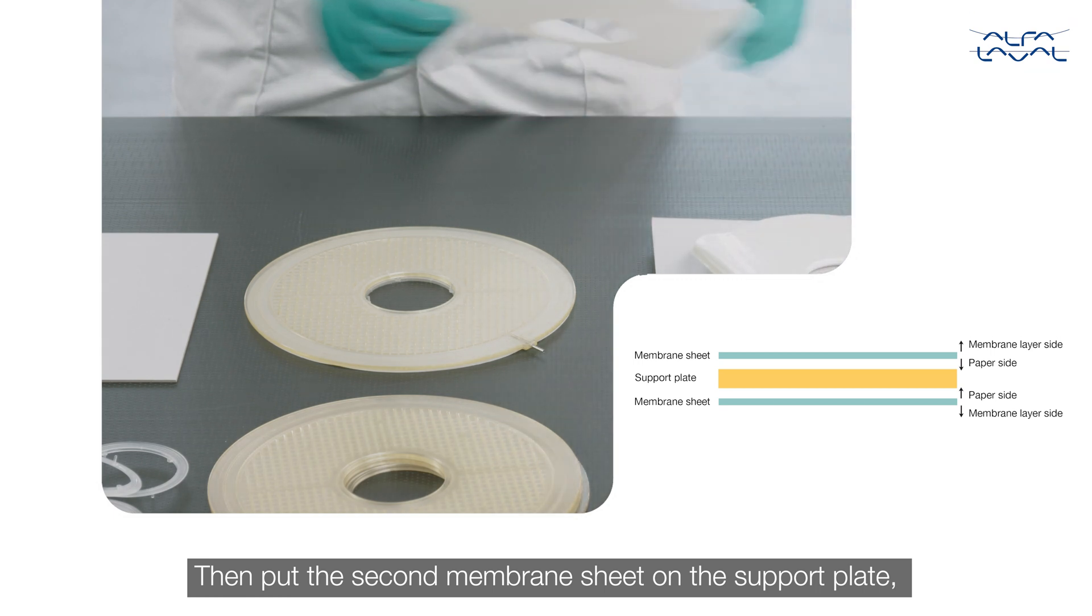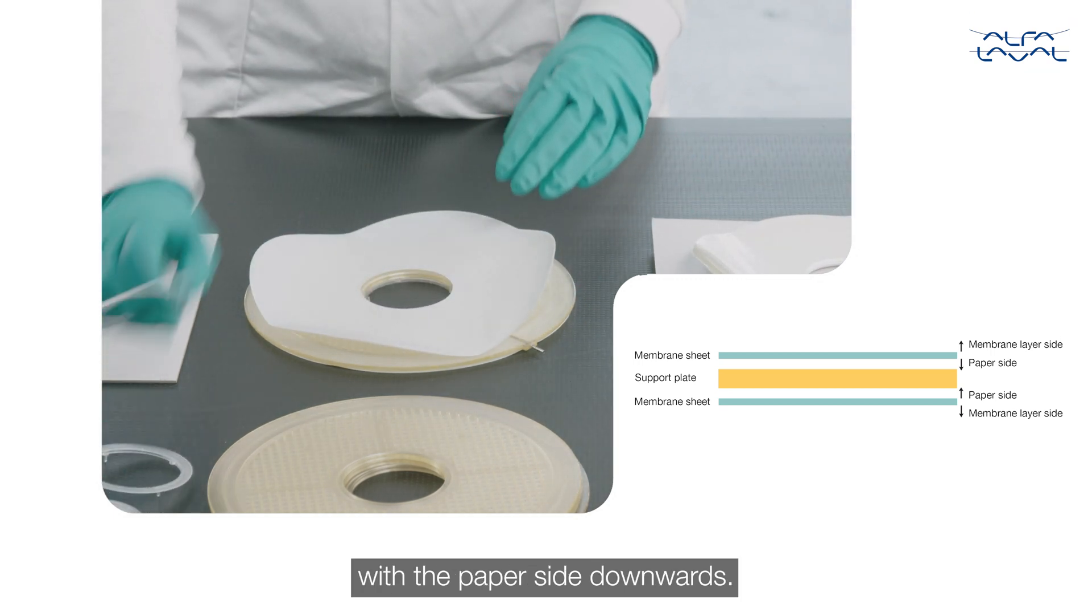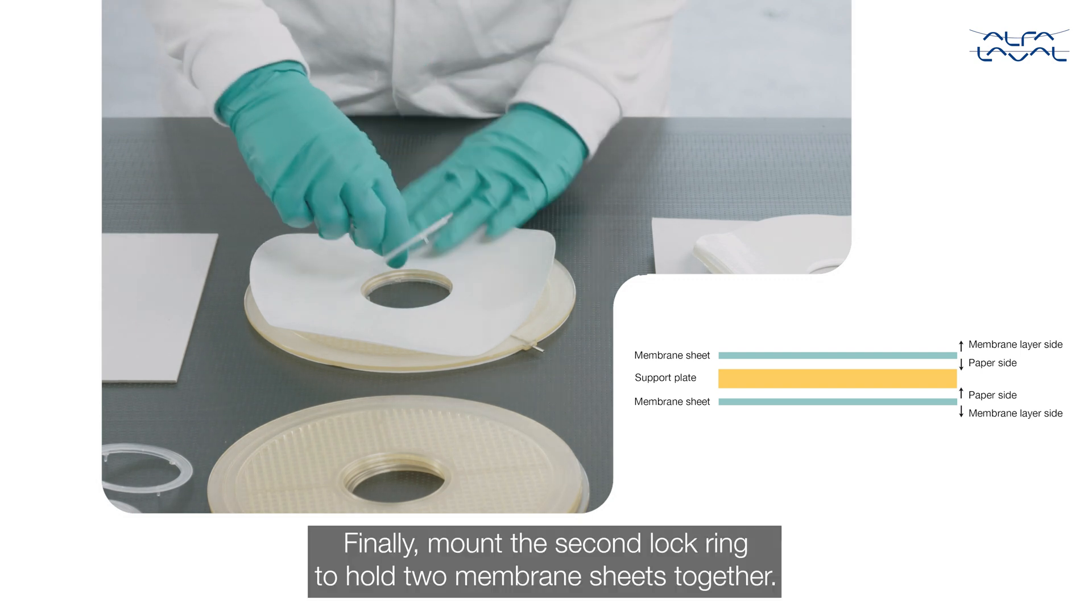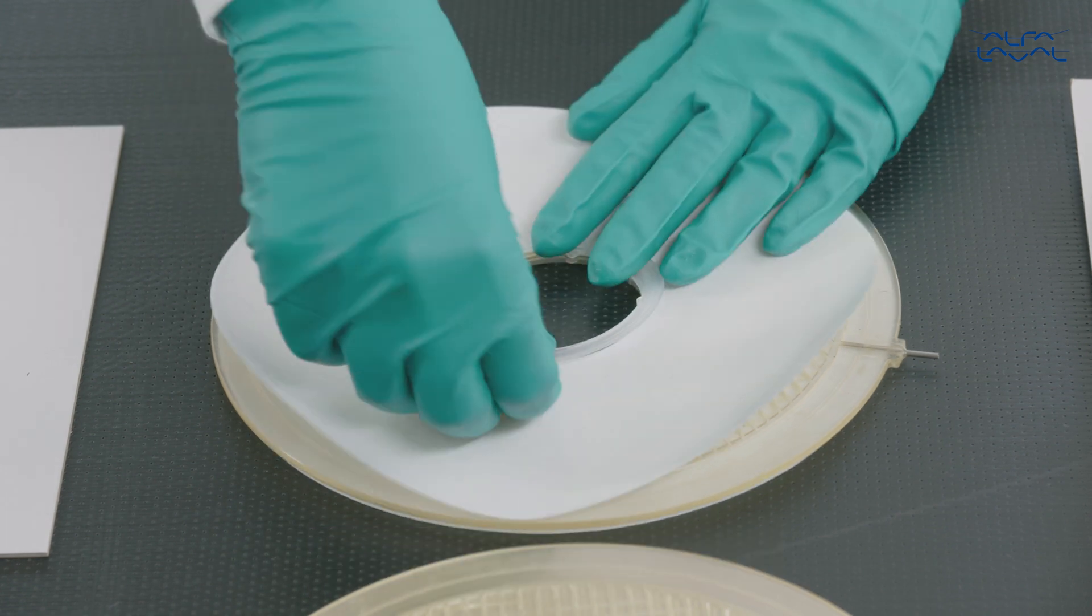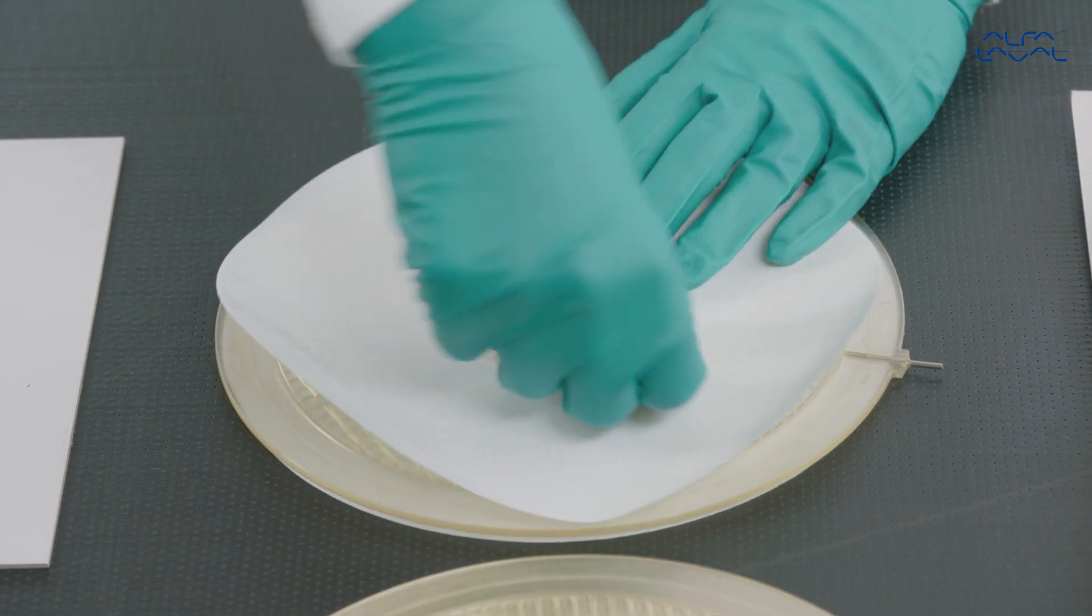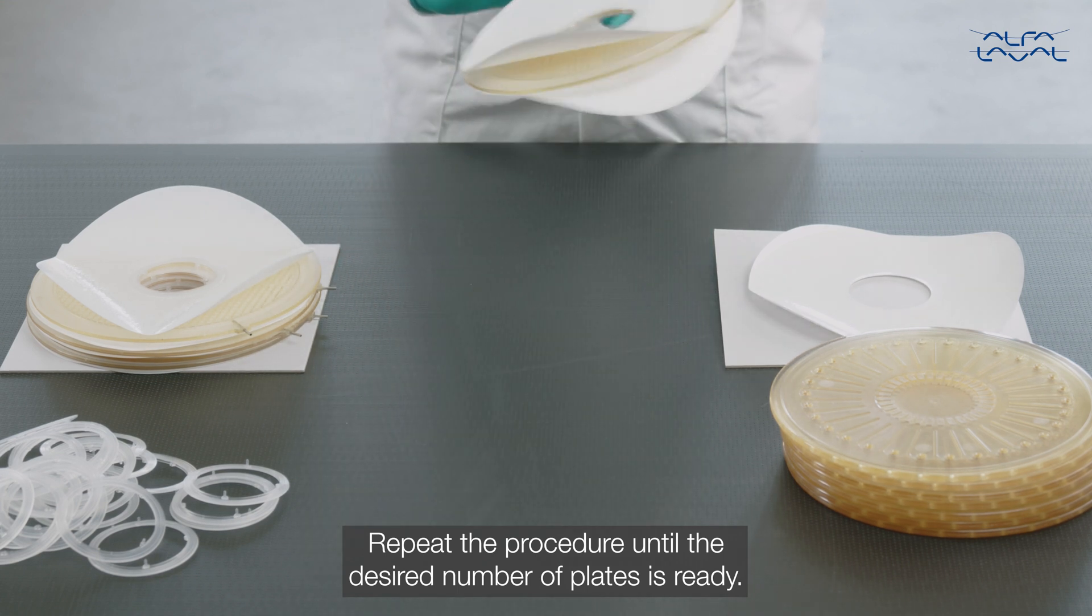Then put the second membrane sheet on the support plate with the paper side downwards. Finally, mount the second lock ring to hold two membrane sheets together. Repeat the procedure until the desired number of plates is ready.